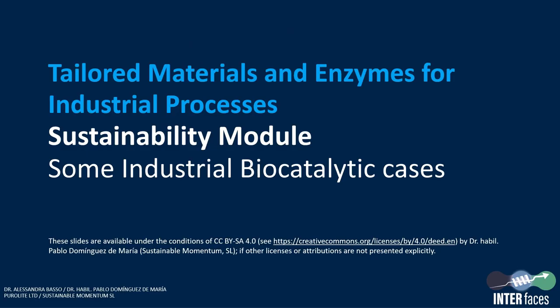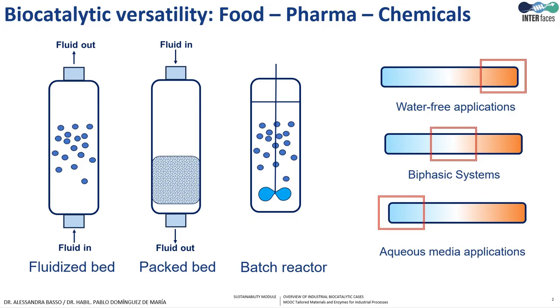Welcome to this presentation in which we are going to see some industrial biocatalytic cases and how biocatalysis can be implemented at industrial scale. The key word in biocatalysis used at the industrial level is versatility, because this allows us to use enzymes, whole cells, and biocatalysis in different reactor types and in different kinds of media.